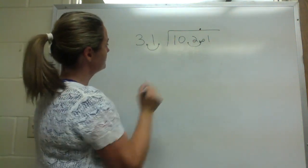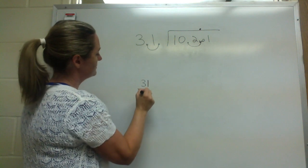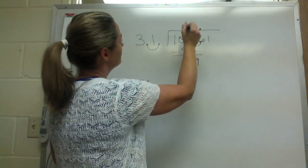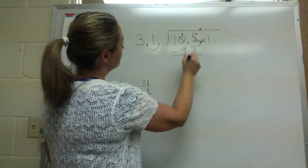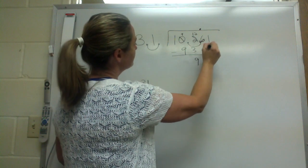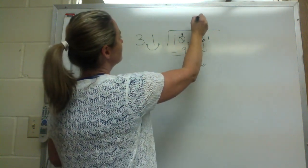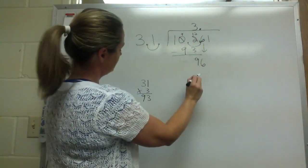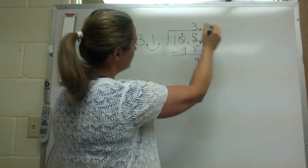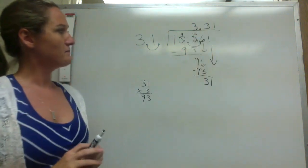31 goes into 10 — nope. 31 goes into 102 — I'm going to guess three times. 31 times 3 is 93. Minus 93 — gives 9. Bring the 6 down: 31 goes into 96, three times, because 31 times 3 is 93. Minus 93 — remainder 3. Bring the 1 down: 31 goes into 31, one time. Not too bad — my answer is 3.31.